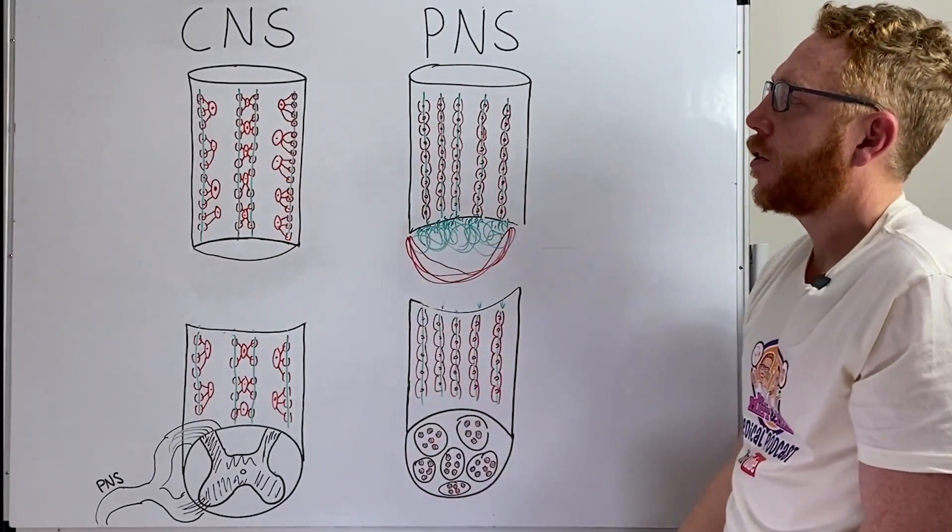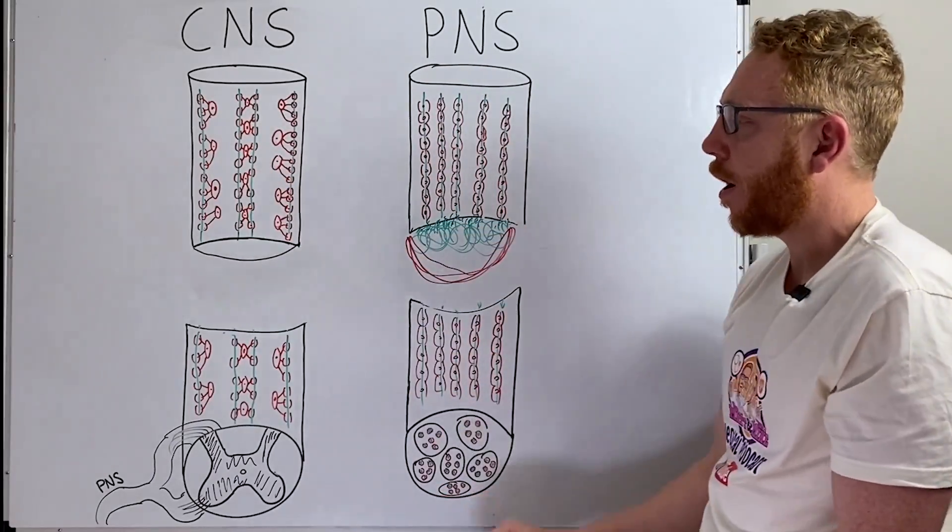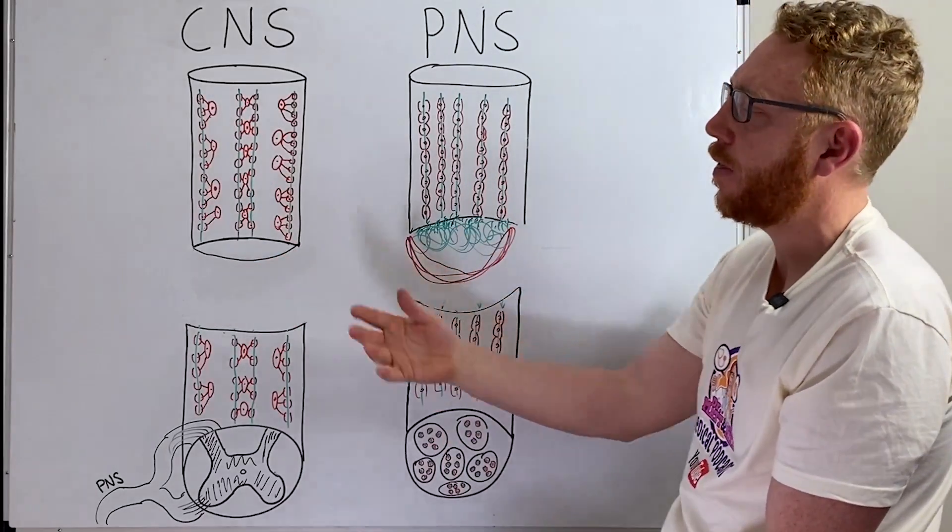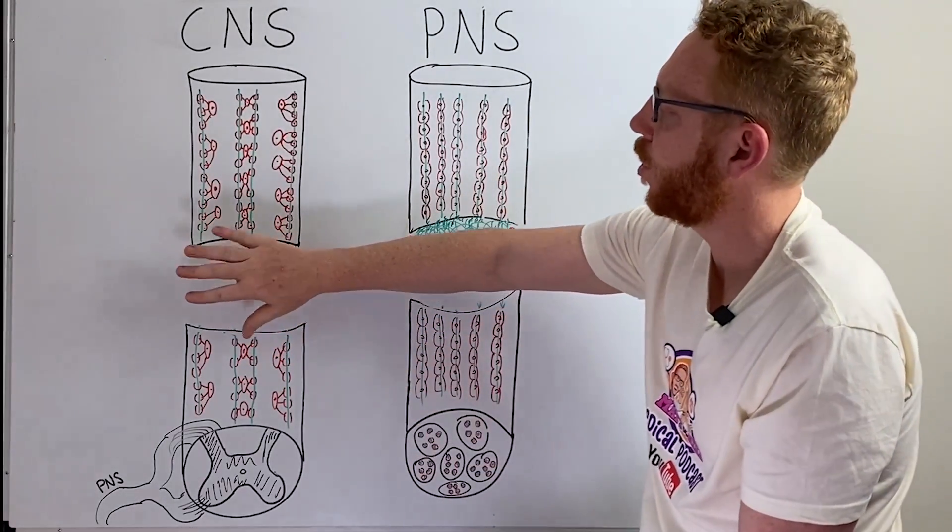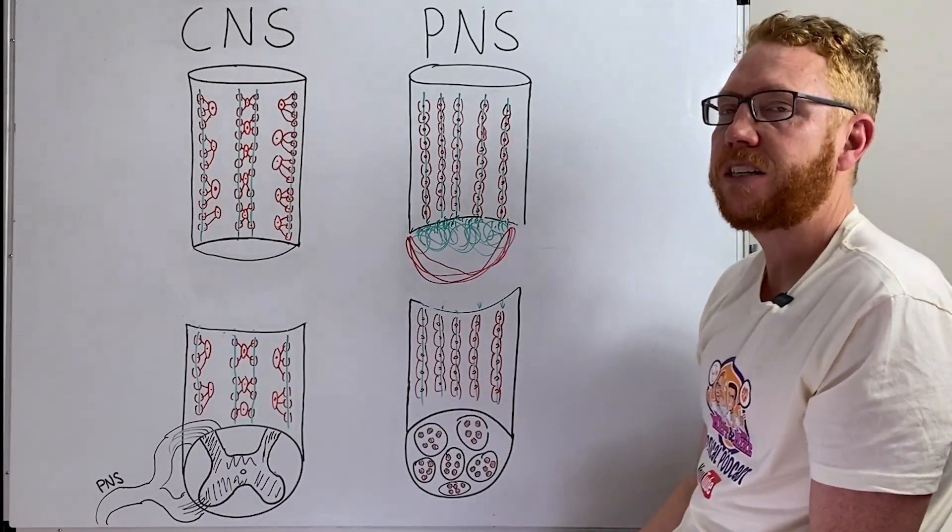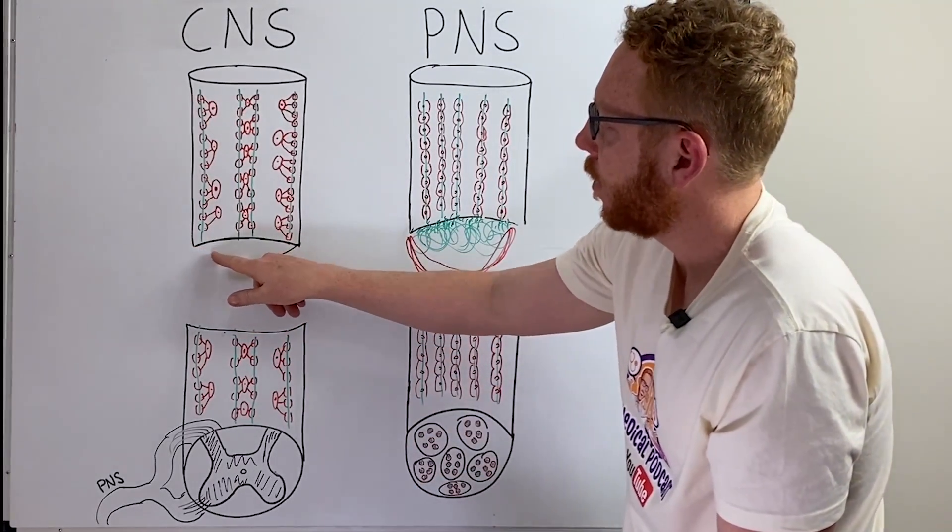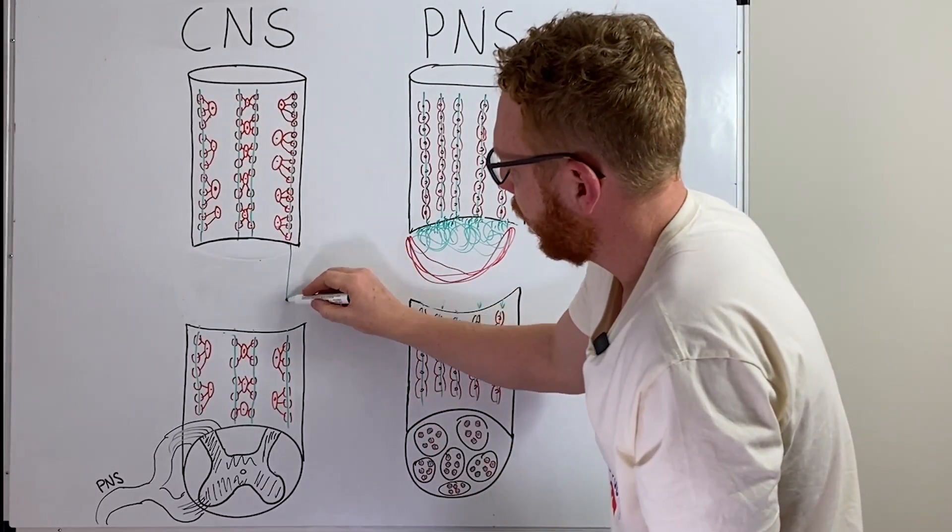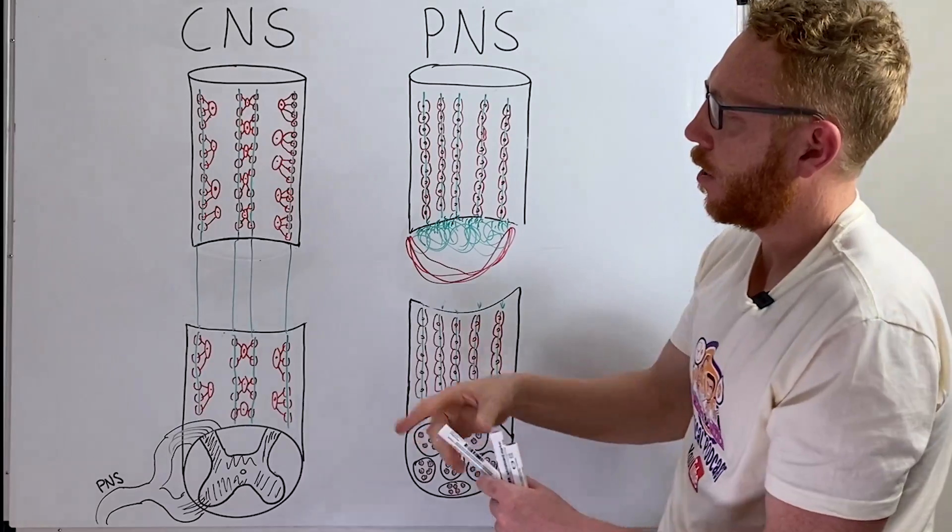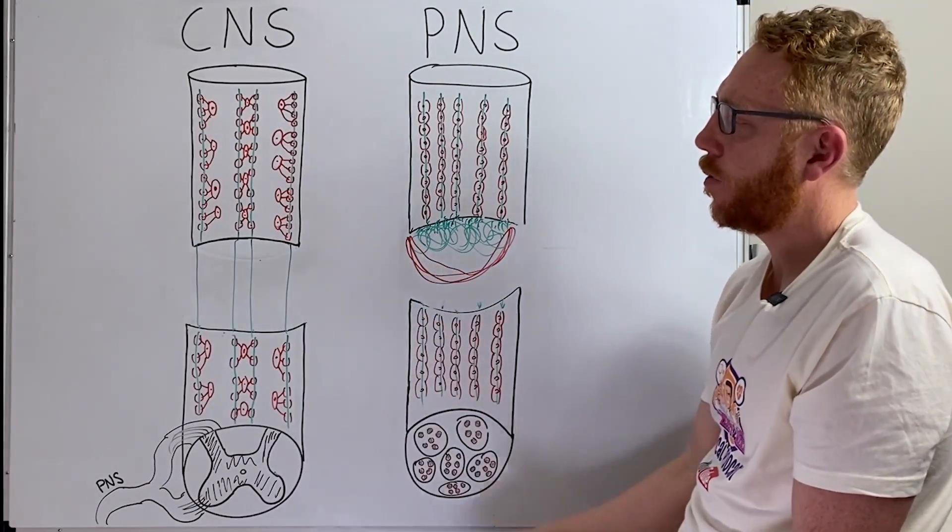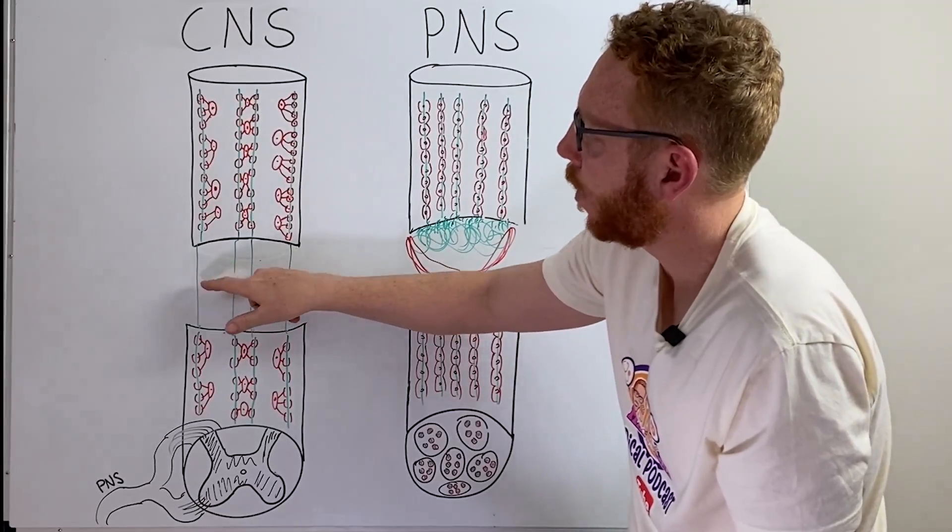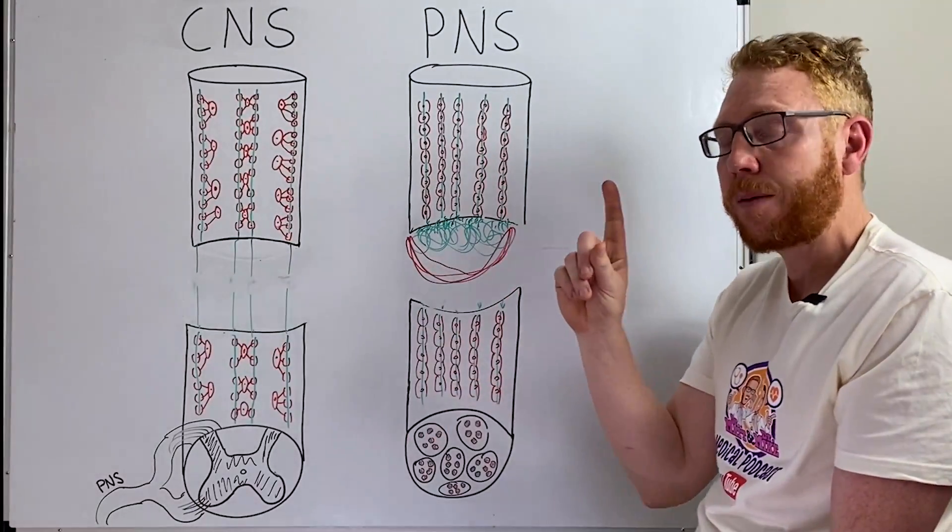Now let's compare it to the spinal cord. In the spinal cord we still have an injury. There's many types of injuries but we'll just focus on a general injury where we just have a crush kind of injury. Now the big difference is the axons which are coming through like this are controlled by the oligodendrocytes.